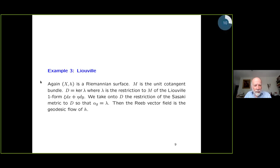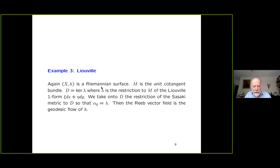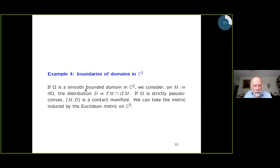The third example is the Liouville case: take a Riemannian surface, M is the unit cotangent bundle, D is the kernel of the Liouville form xi-dx plus eta-dy, with some metric so that alpha_g equals this Liouville form. Then the Reeb vector field identifies with the geodesic flow of the metric h. There is also an example related to complex analysis which I will skip.